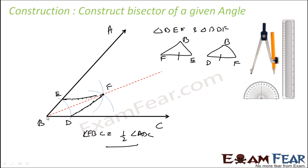Similarly, BE is equal to BD because from point B we drew an arc, so these two are the same length. And the third side BF is common to both triangles, so BF equals BF. So both these triangles are congruent. Since the triangles are congruent, angle EBF equals angle DBF. So angle DBF and angle EBF are both the same — that is the explanation.